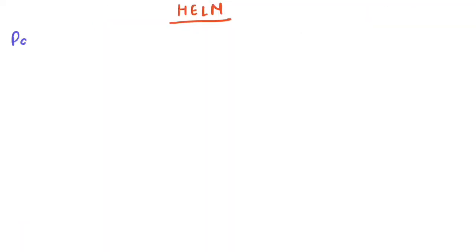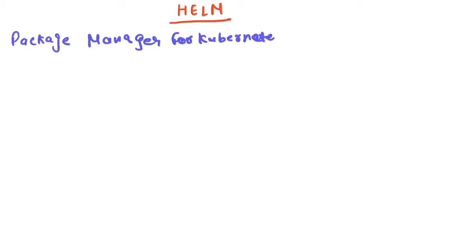Helm is a package manager for Kubernetes applications. What I mean by package manager is that you can standardize the process of deploying any apps onto a Kubernetes cluster using Helm. You can think of it as a play store or app store that we have on our mobile phones, which manages different packages or apps. So Helm contains multiple packages which you can use to deploy any kind of app onto your Kubernetes cluster.